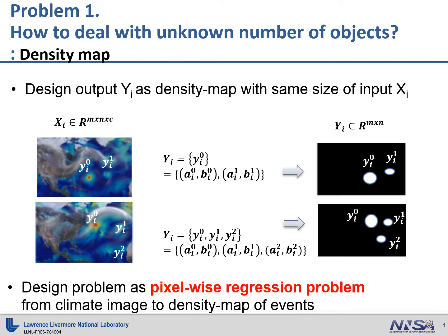Then how can we deal with unknown numbers of objects? To resolve this issue, here we formulate the problem as a density map prediction problem using convolutional LSTM.